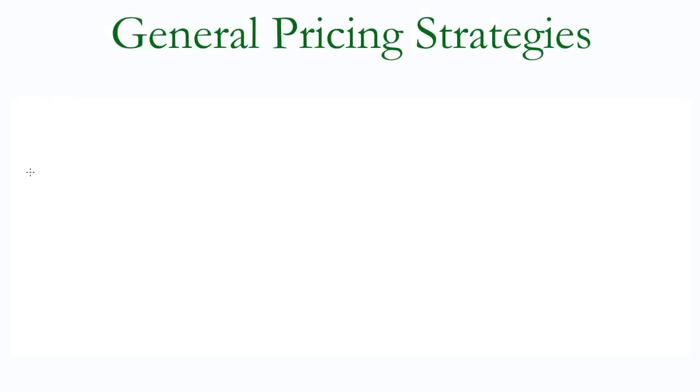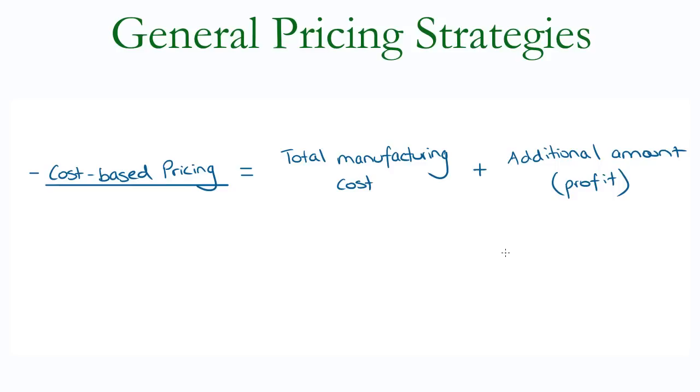Some general strategies include cost-based pricing, which considers the total cost to the business of manufacturing or providing a good or service to the consumer and then adds an additional amount. For example, it costs me 5 cents to produce a chocolate bar but I might sell it for $2 because I want a $1.95 profit on each bar.